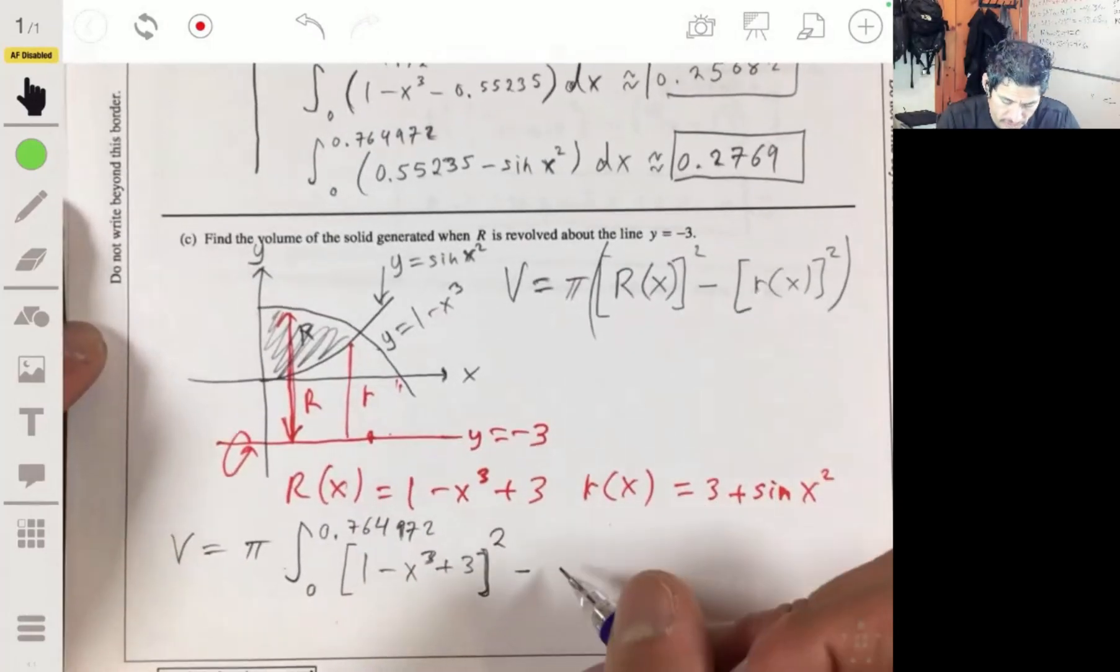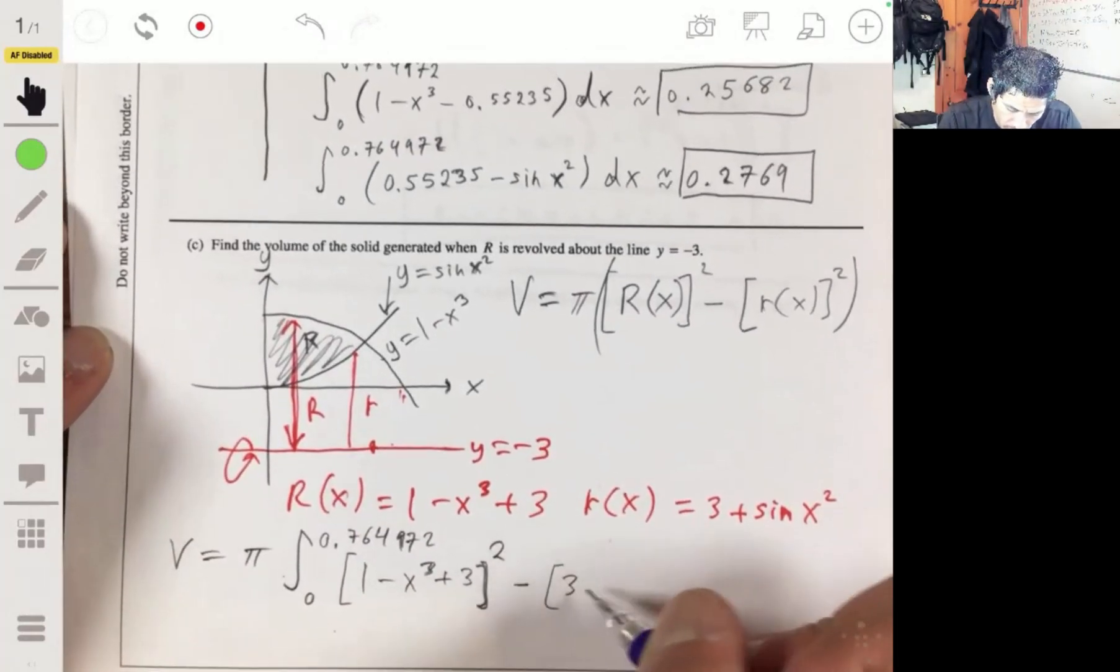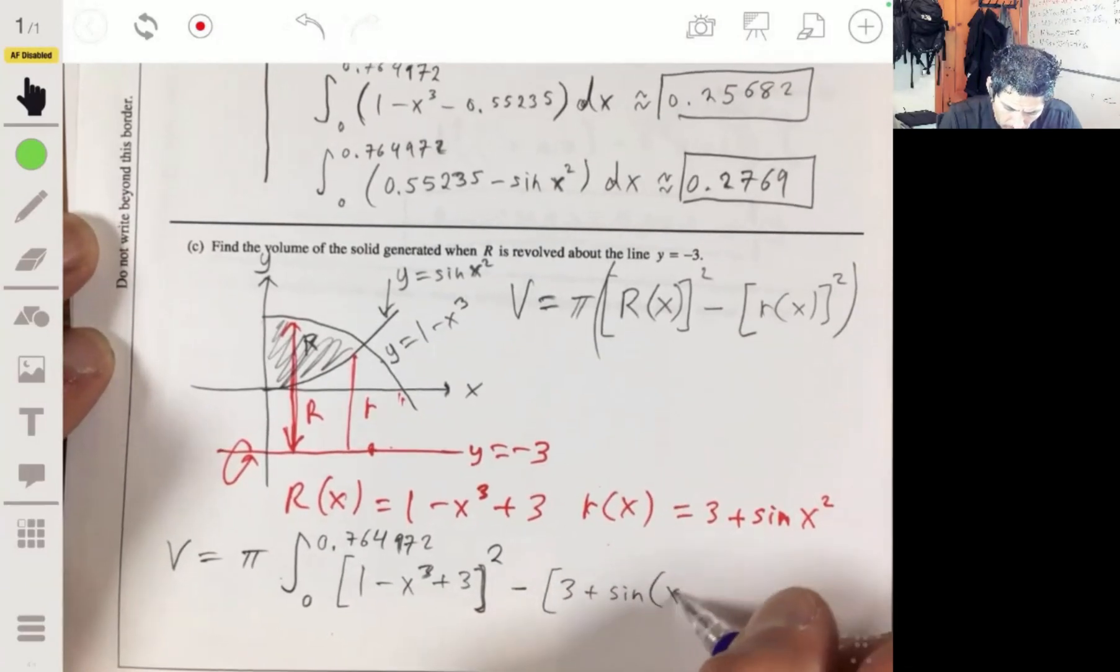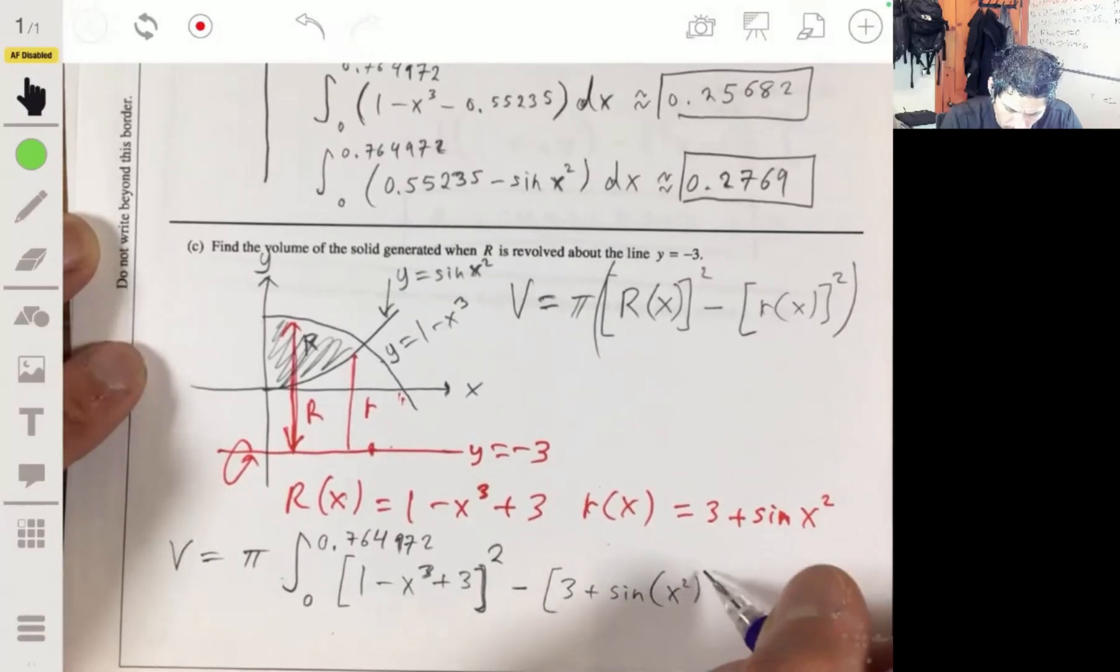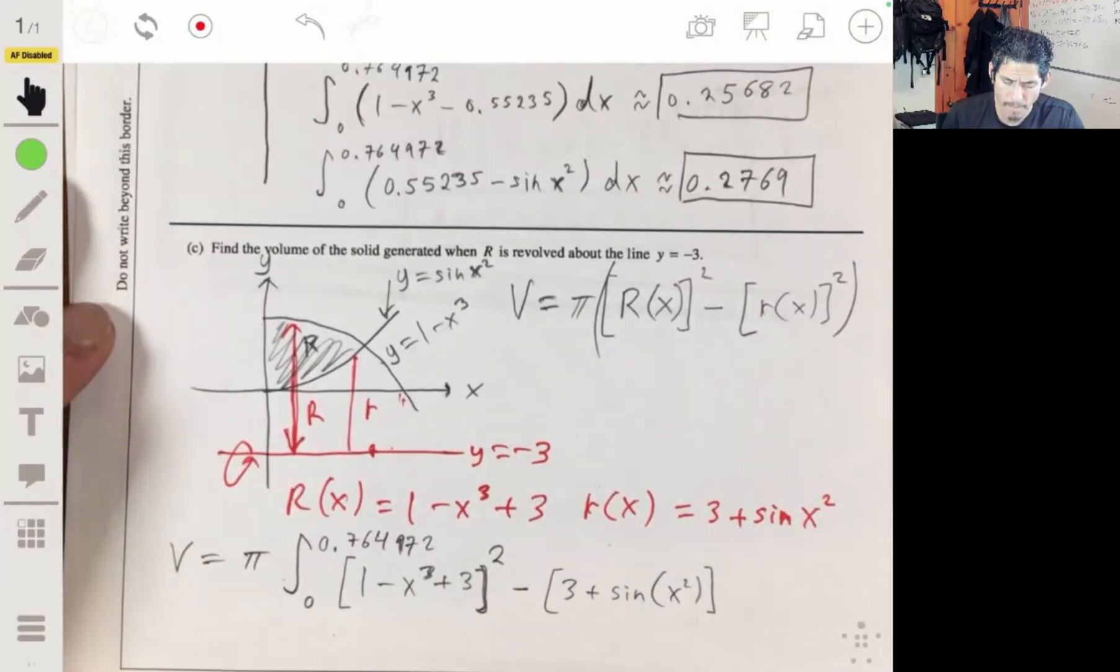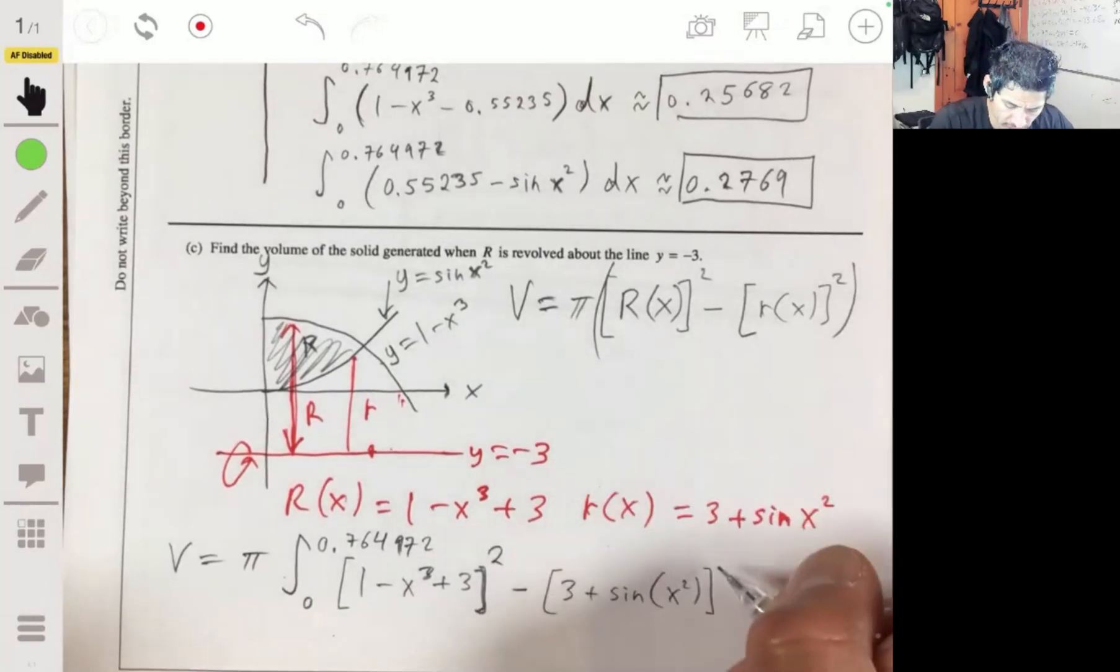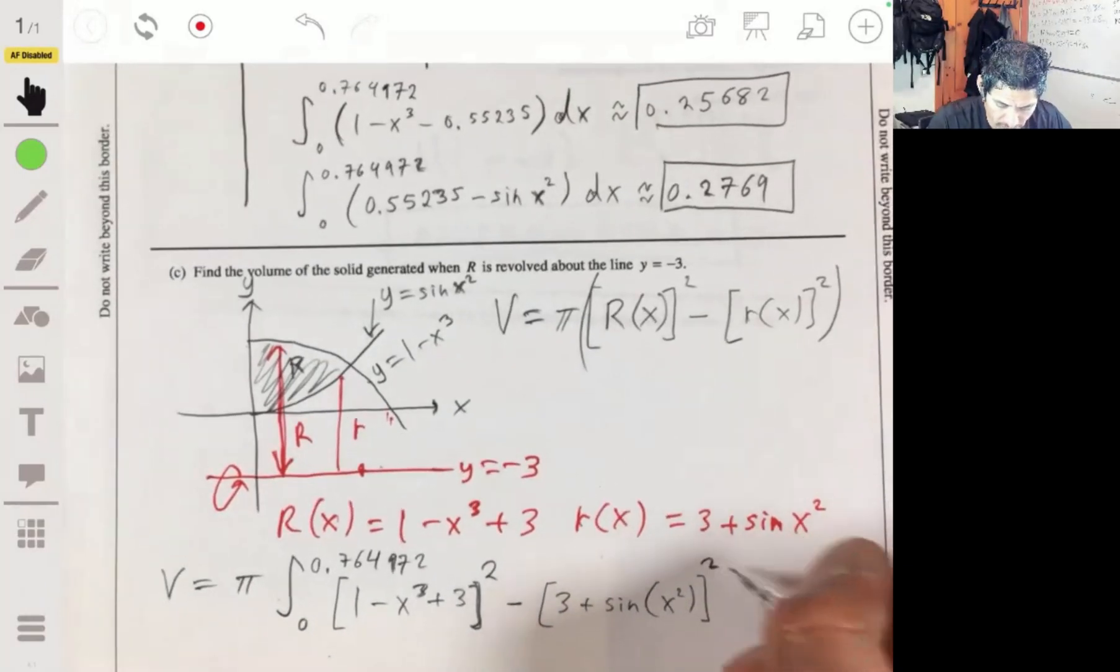Squared minus small R of x squared. 3 plus sine of x squared. And then using calculator technology, let's see what we get. 1 minus x squared. Oh, oops. I forgot to put the x squared here. And I've read the dx. I should not forget those little details.